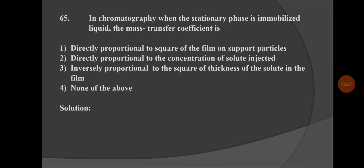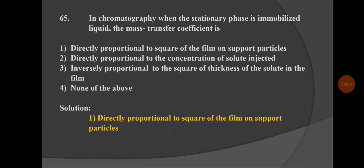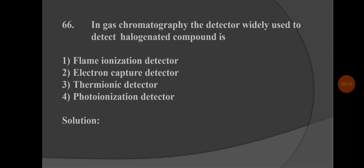Next question: In chromatography, when the stationary phase is an immobilized liquid, the mass transfer coefficient is — option 1: directly proportional to the square of the film on support particles, option 2: directly proportional to the concentration of solute injected, option 3: inversely proportional to the film. The correct answer is option 1: directly proportional to the square of the film on support particles.